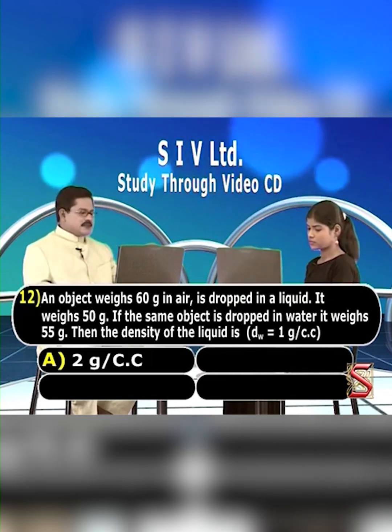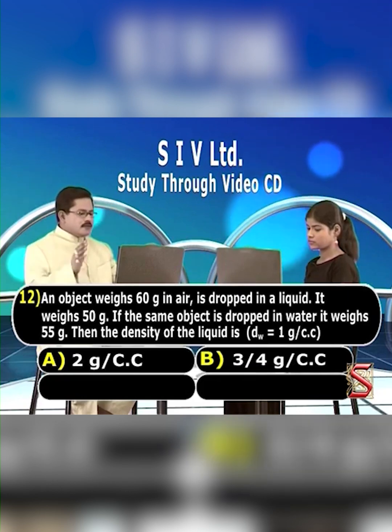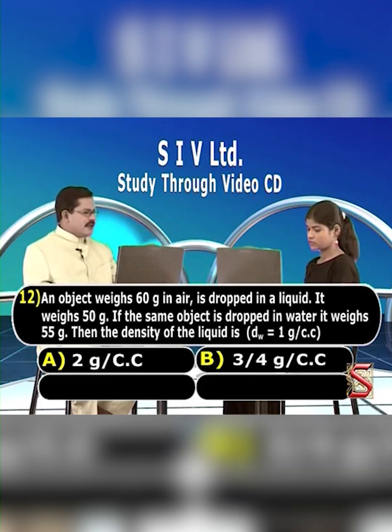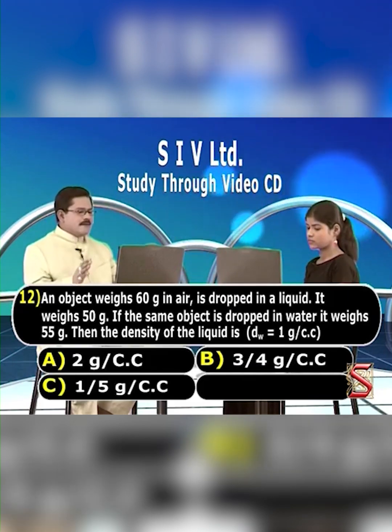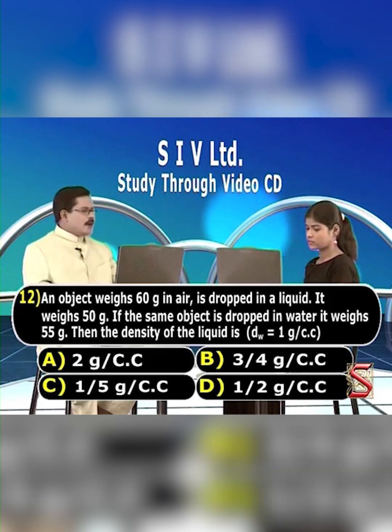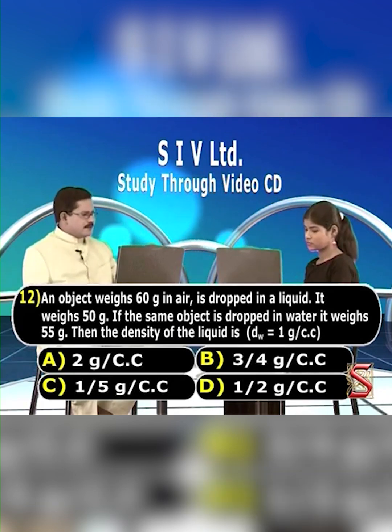Option A: 2 grams per cc. Option B: 3/4 grams per cc. Option C: 1/5 gram per cc. Option D: 1/2 gram per cc.